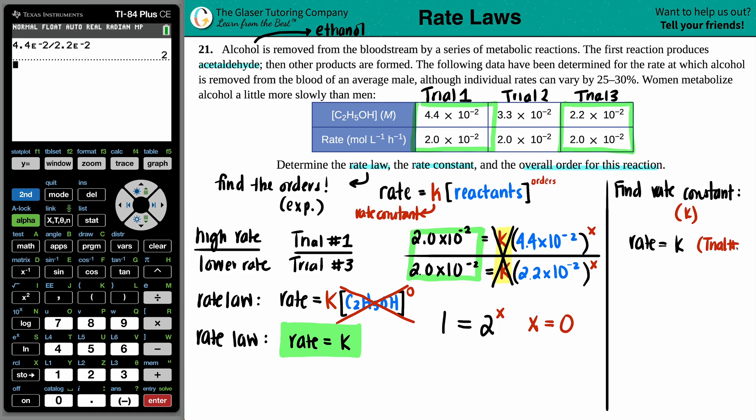In this case, the rate was 2.0 times 10 to the negative second. And the units here is mole per liter to the negative one, h to the negative one. So we can keep those units. Mole, liter, negative one, hour, which is h, to the negative one. And that will equal k. And that is the answer for this one. We didn't even have to do any math because that k value, the rate constant is going to be whatever the rate is. So that's the second part.